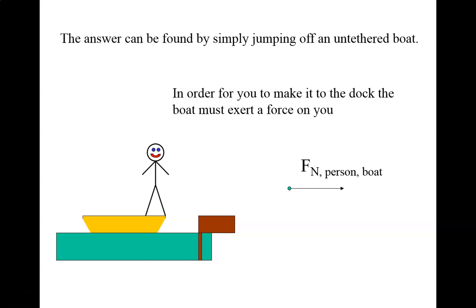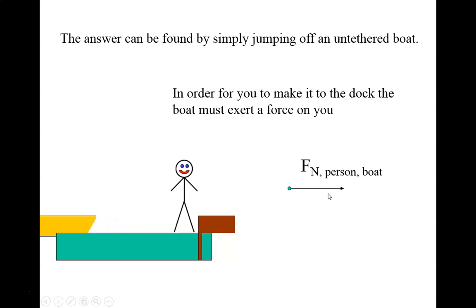So if you think about standing up in a boat and you're near a dock and you want to jump to the dock, something has got to push you forward, so you're going to push off the boat. The boat's going to push you forward when you push off of it. So there has to be a normal force on the person by the boat to the right. Now when they jump forward, they may not make it to the dock because the boat is going to be moving backwards.